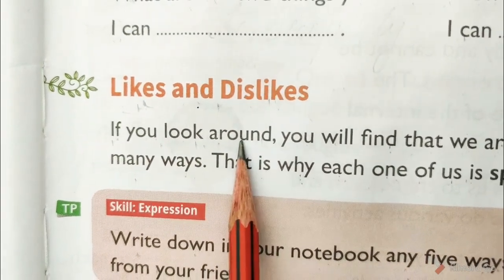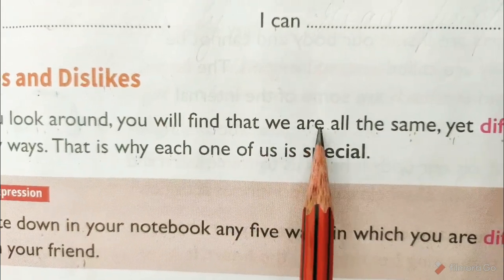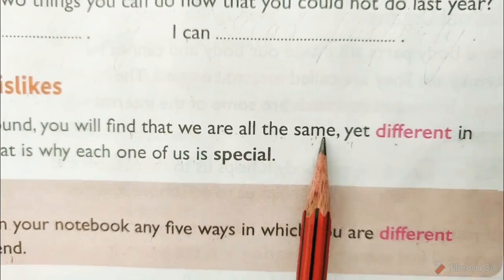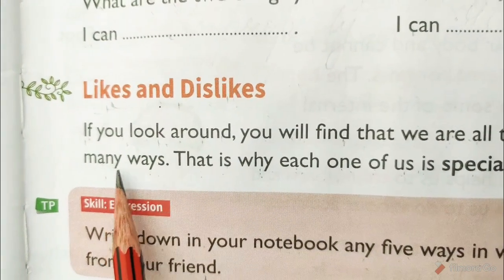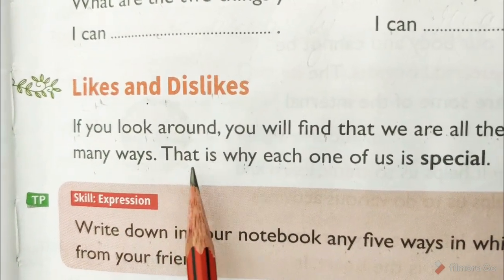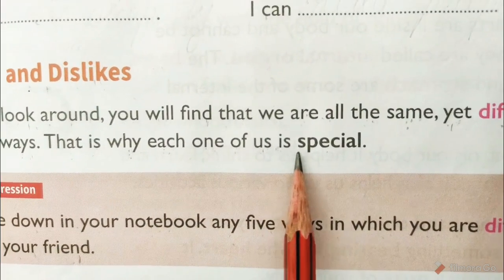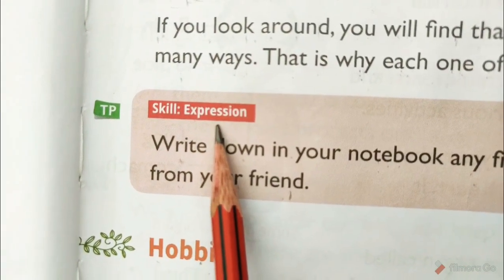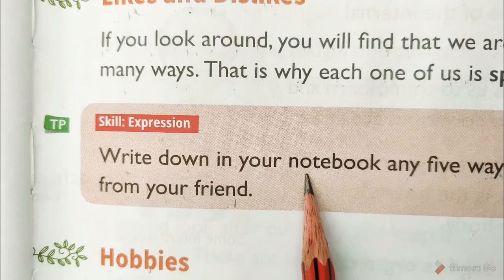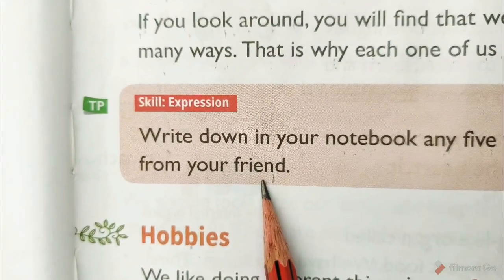Likes and dislikes. If you look around, you will find that we are all the same yet different in many ways. That is why each one of us is special. Skill expression: write down in your notebook any five ways in which you are different from your friend.